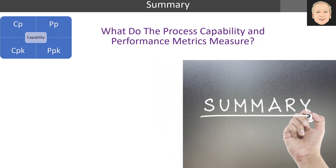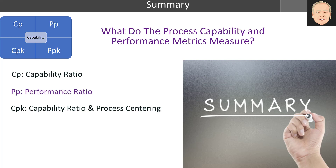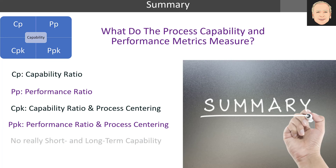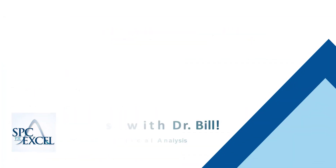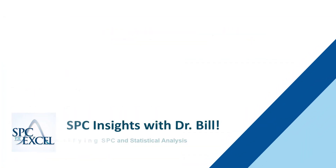So what do the performance metrics and process capability measures tell us? We had four: CP, PP, CPK, and PPK. These values will tell you whether or not a process is in control or if it's centered. There's no real short or long term capability distinction, and we looked at examples of both a stable and unstable process.